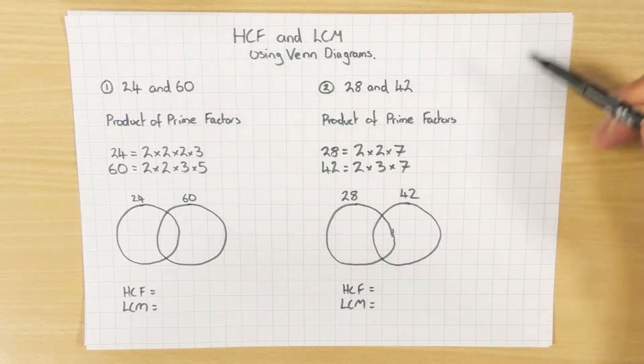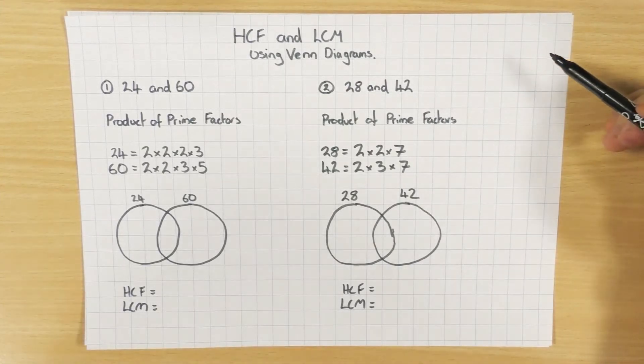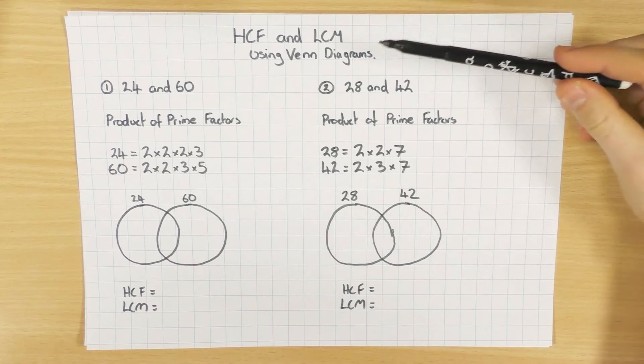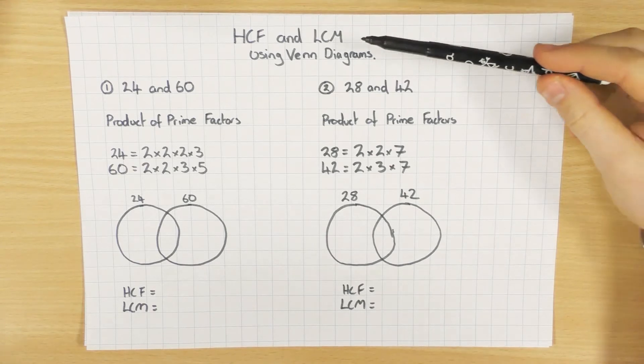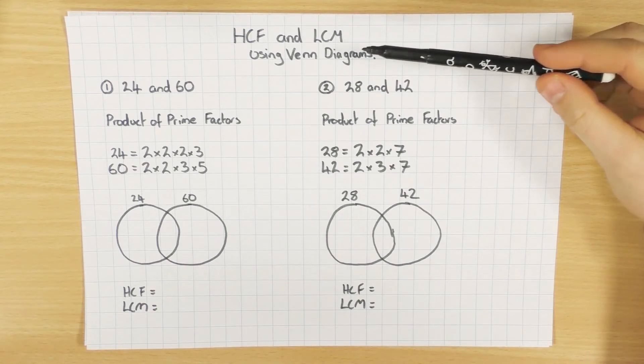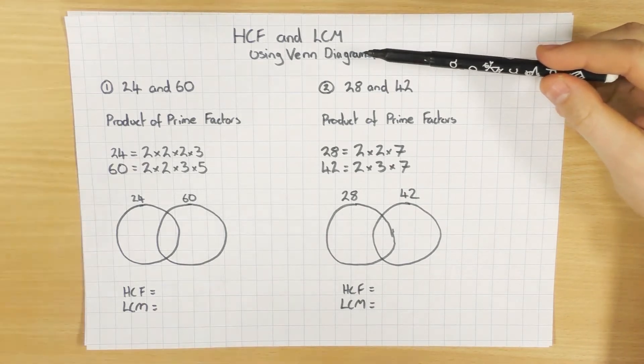Now we're going to have a look at how you find the highest common factor and lowest common multiple of two numbers using Venn diagrams.